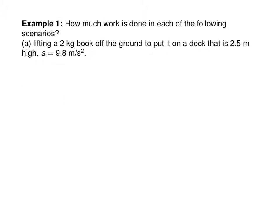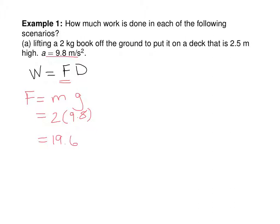Let's consider the work done in the following scenario: suppose you lift a 2 kg book off the ground and put it on a deck that is 2.5 meters high, using acceleration due to gravity of 9.8 meters per second squared. The work equals force times distance. The force equals mass times gravitational acceleration: 2 times 9.8 equals 19.6 newtons. The work is then 19.6 multiplied by 2.5, which is 49 joules.